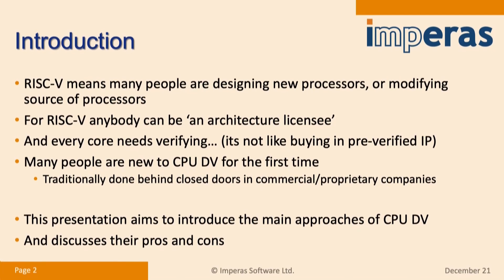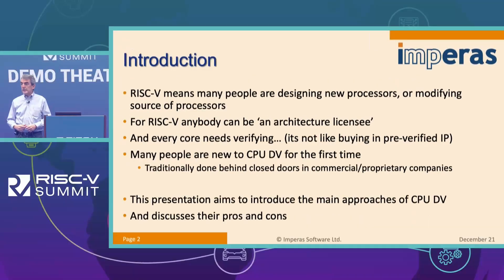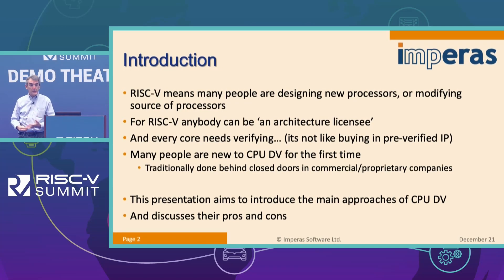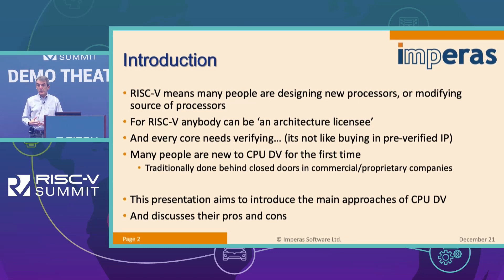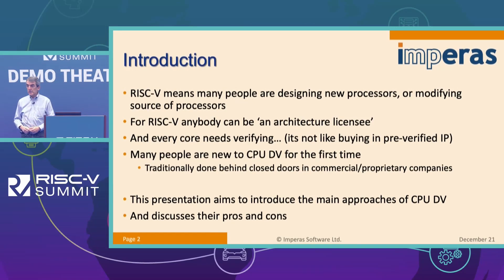RISC-V is allowing a lot of design freedom to customize and optimize a processor that's unique for your SOC application. There's a lot of talk about the design freedom — you can tune it, optimize it, take all the standard extensions, or add custom instructions. So there's a lot of freedom to innovate around the RISC-V architecture. What that means now is for every SOC developer, you're effectively your own custom processor responsibility, which takes on an extra challenge of verification.